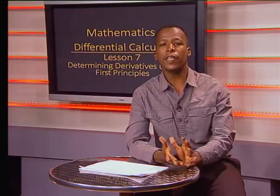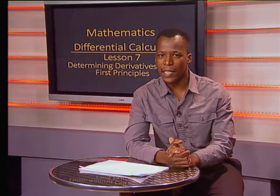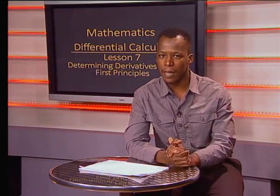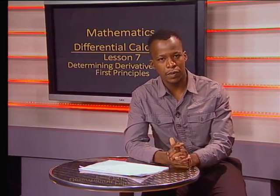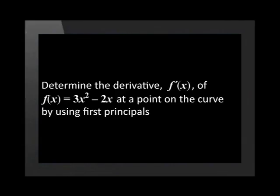Remember that you can also say f prime x rather than f dash x. Now let's look at our first example. Determine the derivative f dash of x of the function f of x equals 3x squared minus 2x at a point on the curve by using first principles.